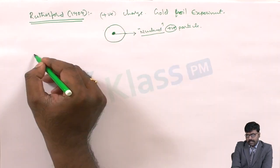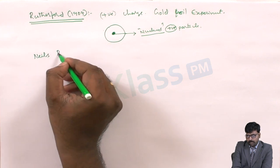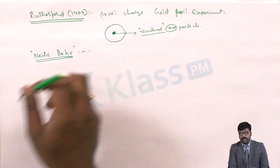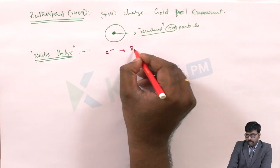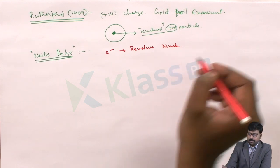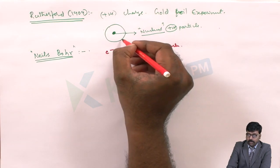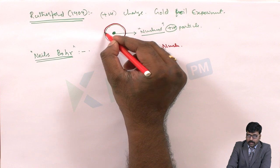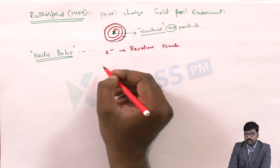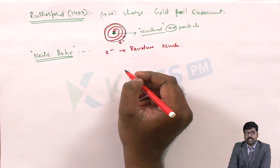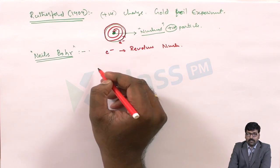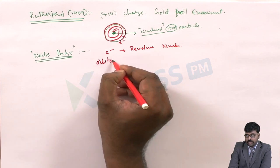Then, Niels Bohr came up with Bohr's atomic model of hydrogen. He explained that electrons revolve around the nucleus in a definite orbital. Rutherford had explained that electrons rotate around the nucleus in a spherical manner and would eventually collide at the center. Niels Bohr disagreed and said that electrons revolve around the nucleus in a definite path, which he called orbitals.